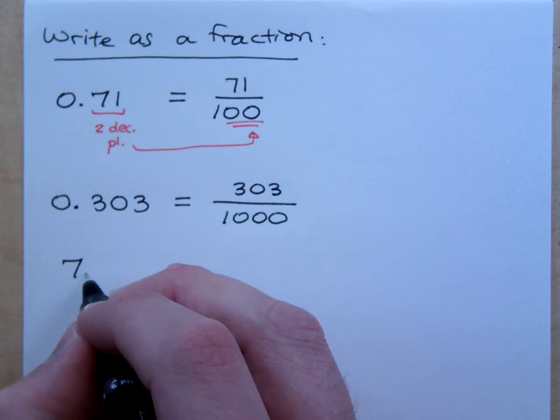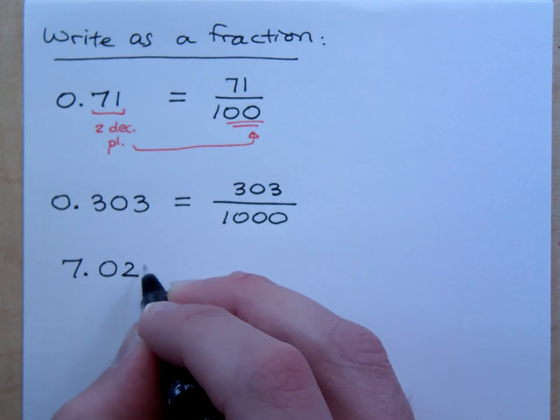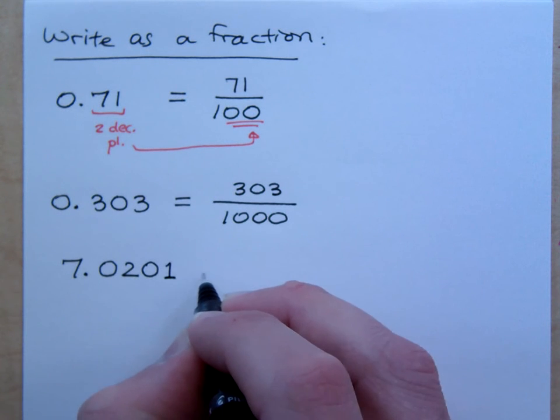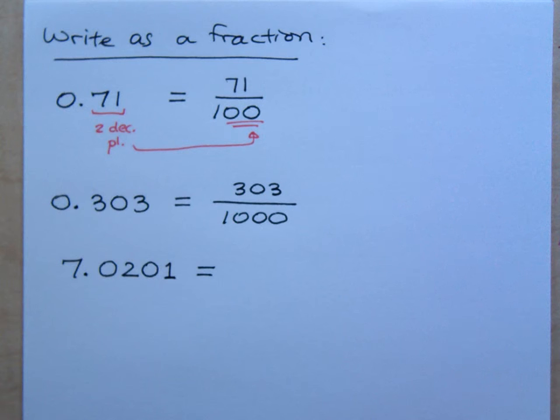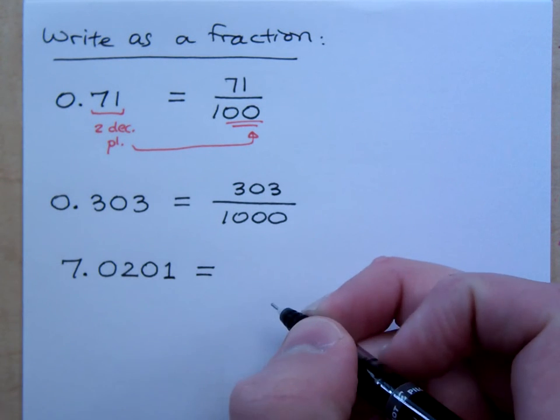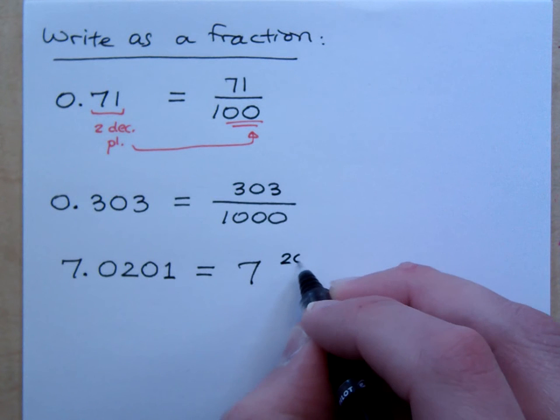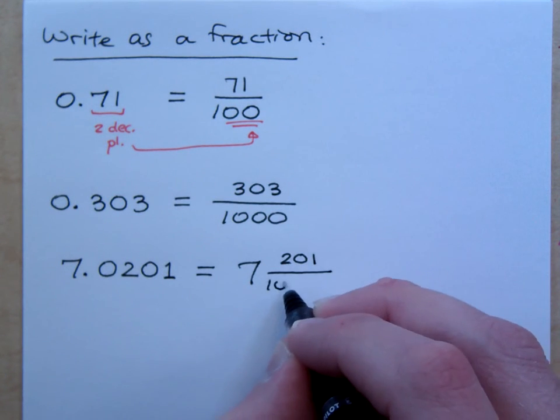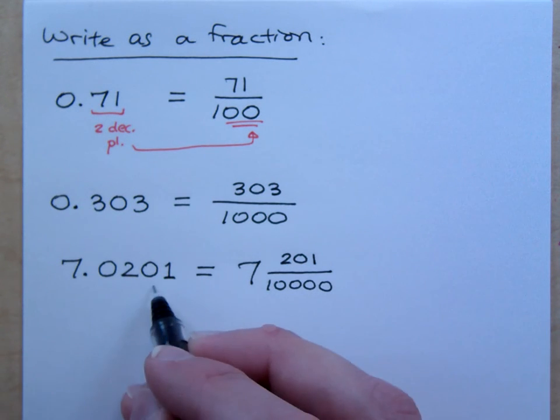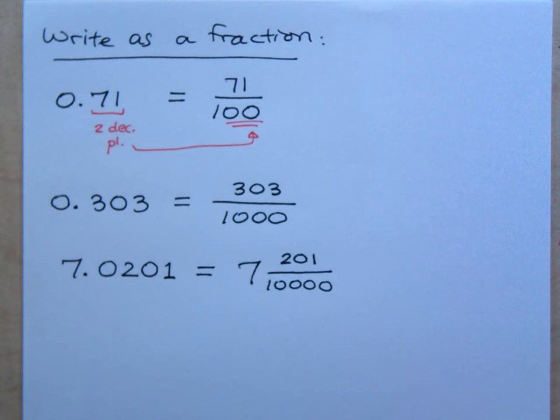What if I were to say 7.0201? Well, if I read this to you, then I'm just giving away the answer. How would you read this number? The proper technical way of reading this number is seven and, and then you do the decimal. But that almost sounds like we're saying a mixed number, right? So this is seven and two hundred one ten-thousandths. Four decimal places, four zeros. Do you all agree?